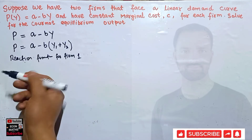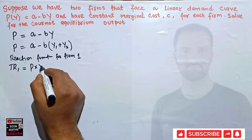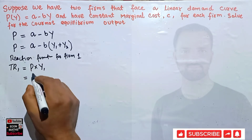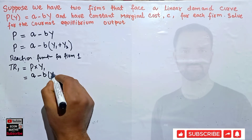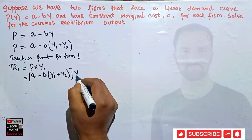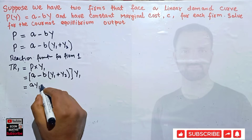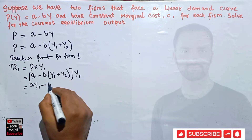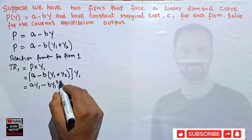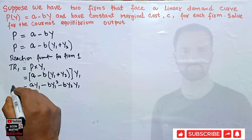Total revenue for firm one equals price times output produced by firm one: P × Y1. Since P = a - b(Y1 + Y2), we multiply through by Y1. This gives us: TR1 = aY1 - bY1² - bY2Y1. Here, bY1² comes from b × Y1 × Y1, and bY2Y1 comes from multiplying Y1 by the Y2 term.